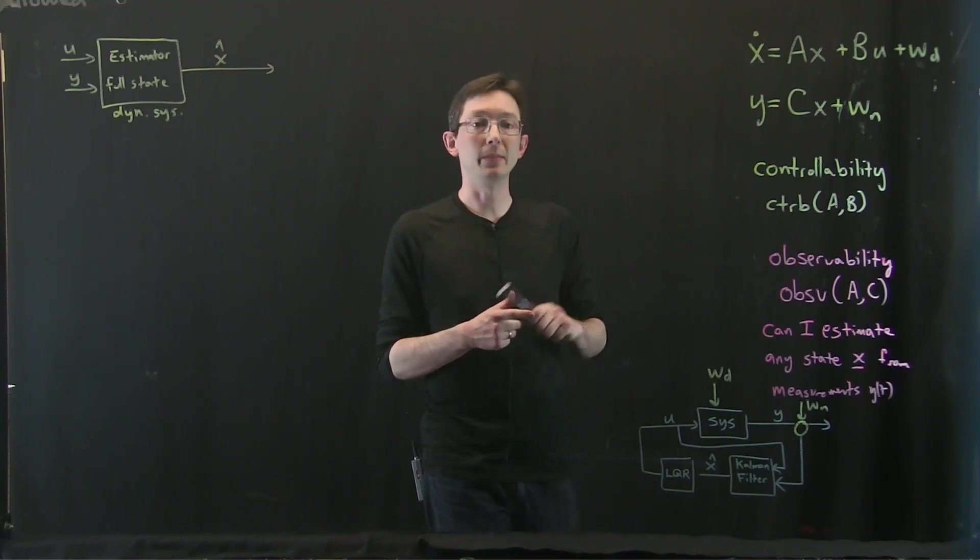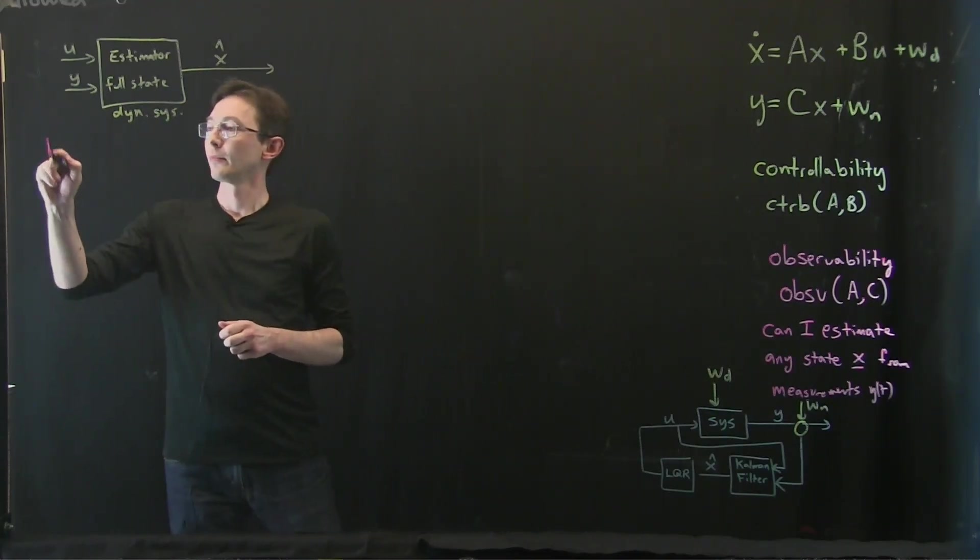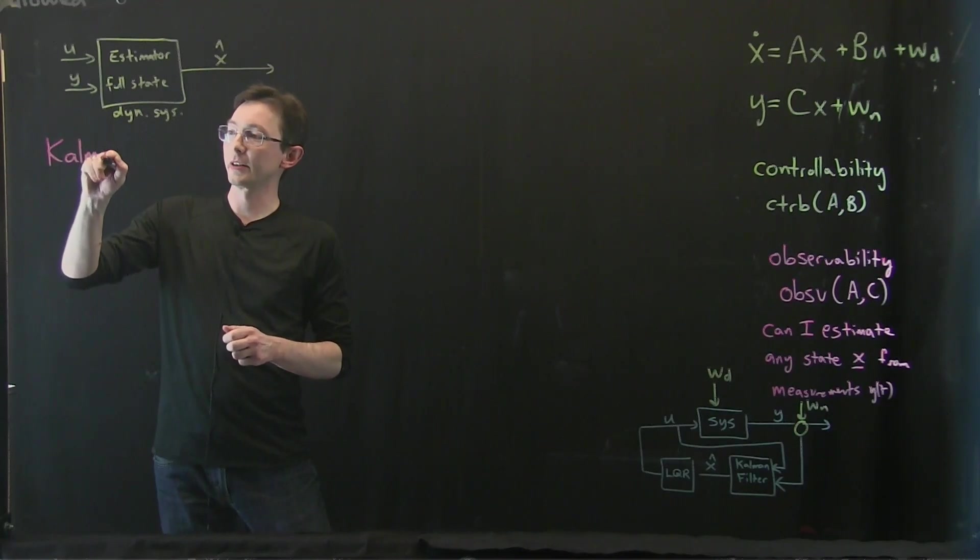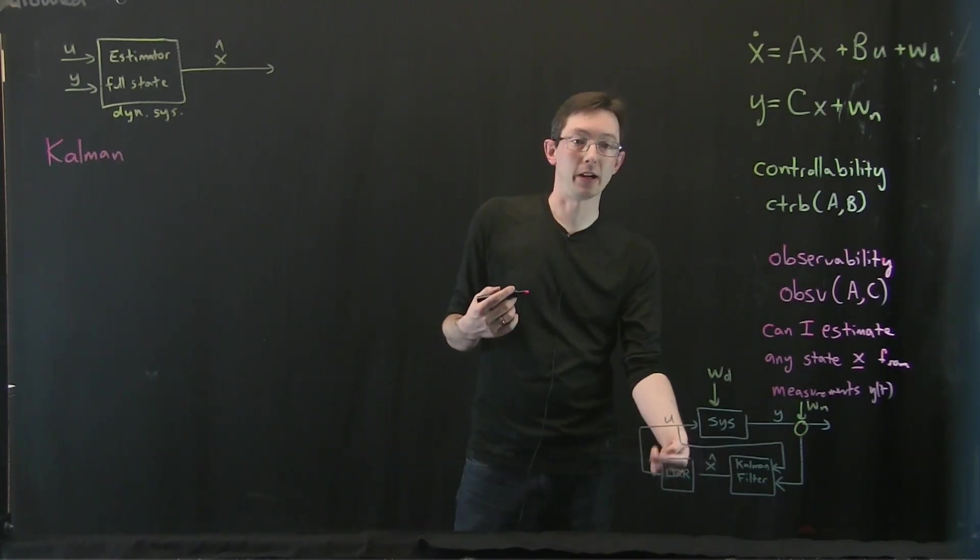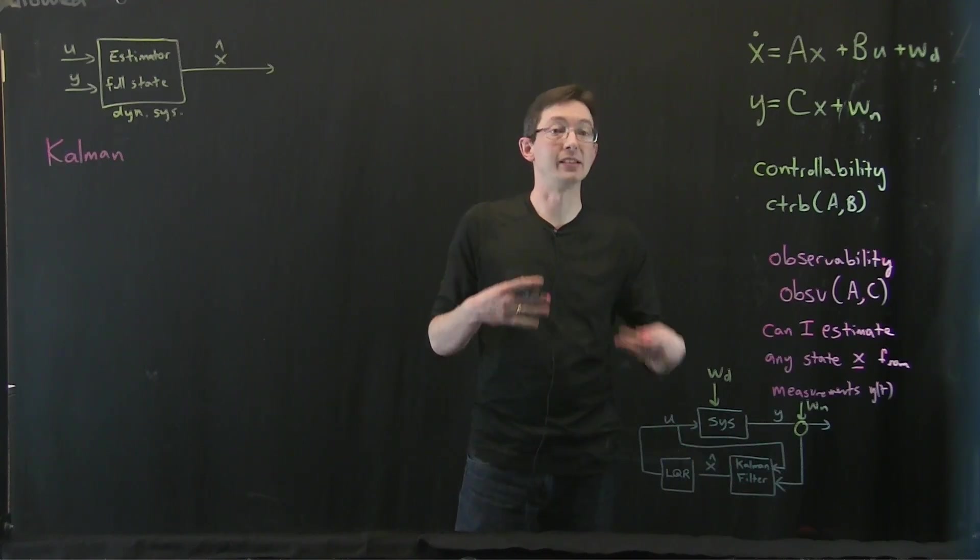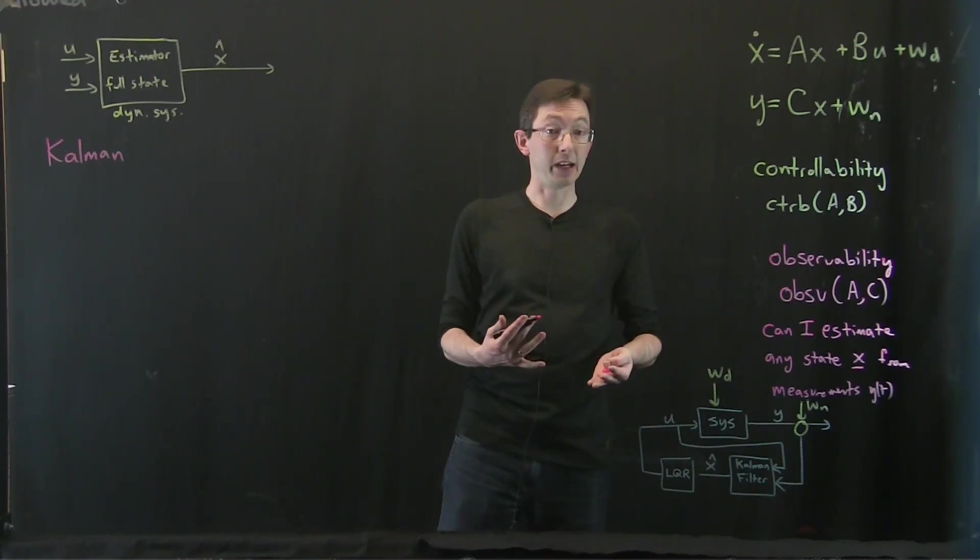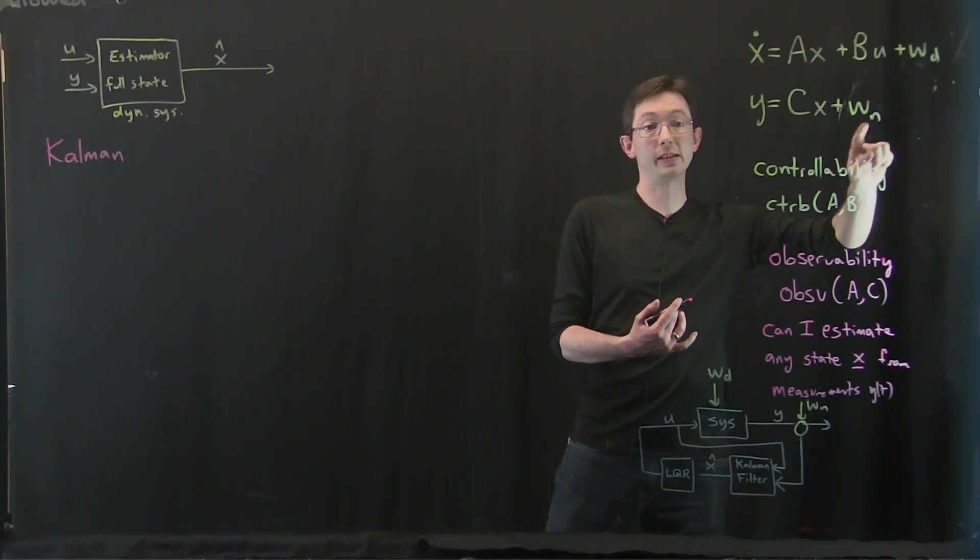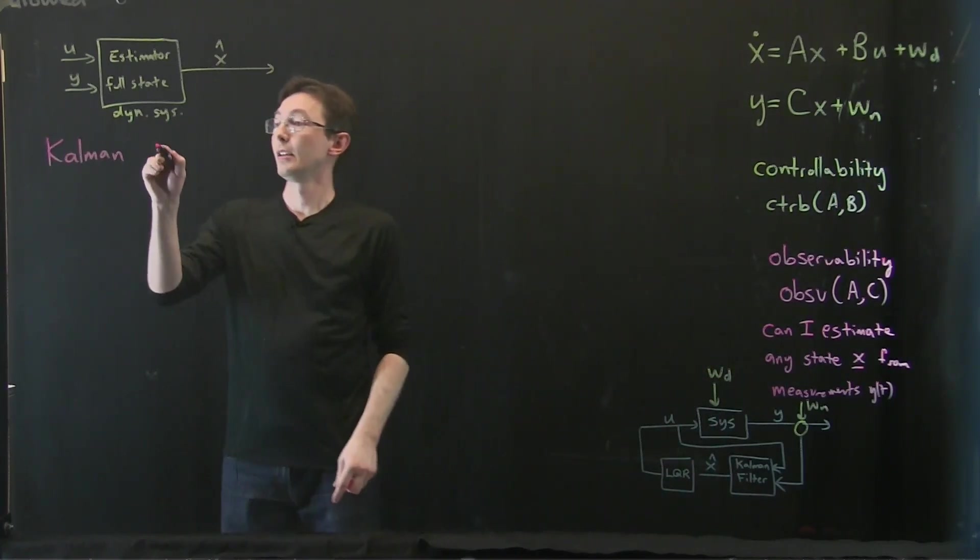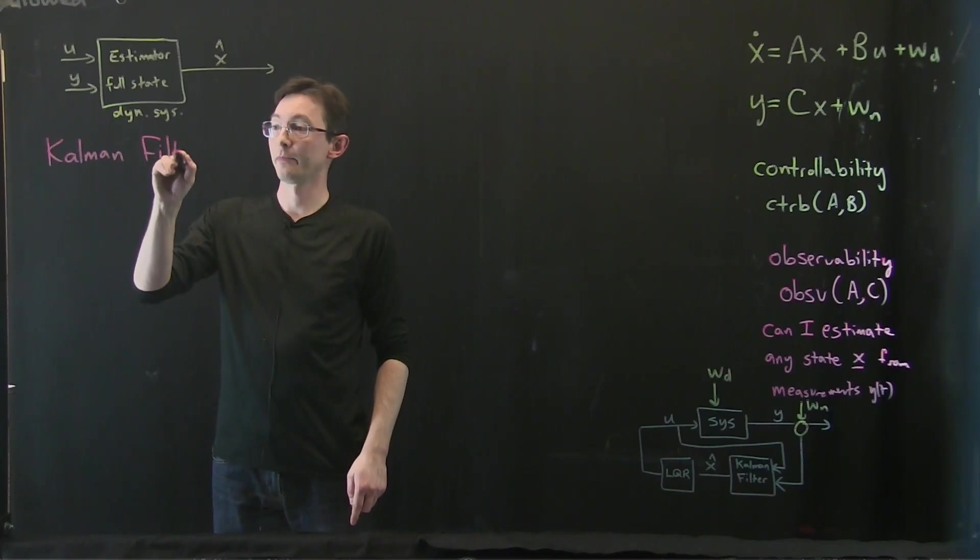Okay, we're finally ready to build the Kalman filter. The Kalman filter is basically the analog of the linear quadratic regulator for estimation. It's the optimal full state estimator given some knowledge about the types of disturbances and types of measurement noise that I'm going to experience.